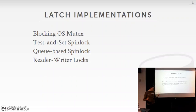Now let's talk about how to actually implement a latch. There are four major types in the context of a database: the blocking OS mutex, the test-and-set spin lock, the queue-based spin lock (MCS lock), and the reader-writer latch. The fundamental primitive underlying all of them is compare-and-swap.